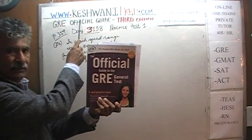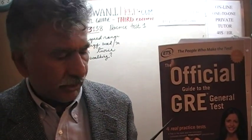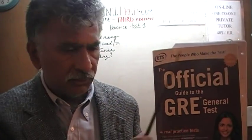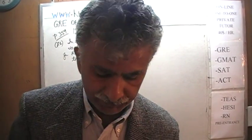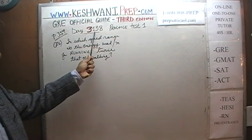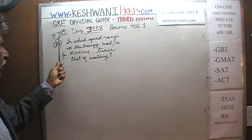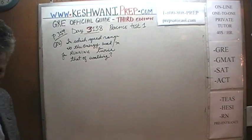Hello, my name is Keshwani, that's K-E-S-H-W-A-N-I. We are here because we want to prepare for the GRE. We have been solving math problems out of this book, the official guide to the GRE, the third edition. If you do not own this book already, purchase one immediately — you are going to need it. Today is our lesson number 138, Day 3138. The 3 is to signify the fact that we are on the third edition, third edition day 138. We are solving a problem from practice test number 1, and we are on page number 359, problem number 21.